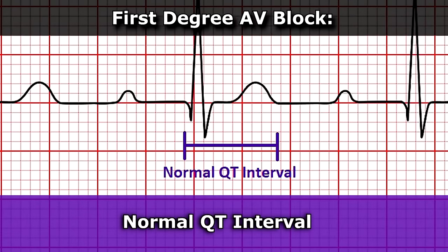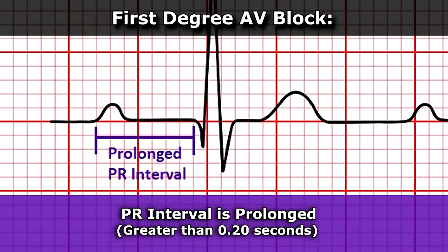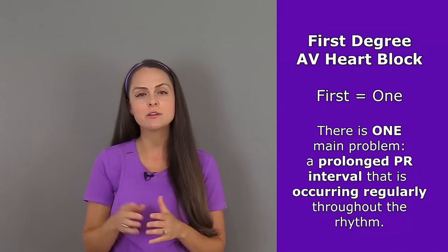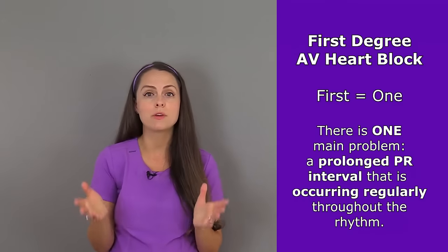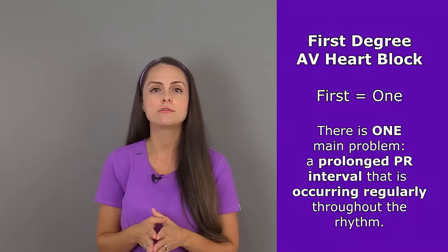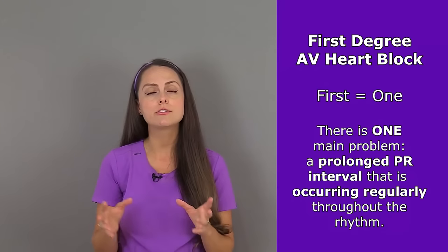You will have a normal QT interval, but when you measure the PR interval it is going to be prolonged — greater than 0.20 seconds. As you can see with this rhythm, we have a prolonged PR interval, and that is the only difference between this and a sinus rhythm. To help you remember: first-degree means one big problem — a prolonged PR interval occurring regularly throughout the rhythm.